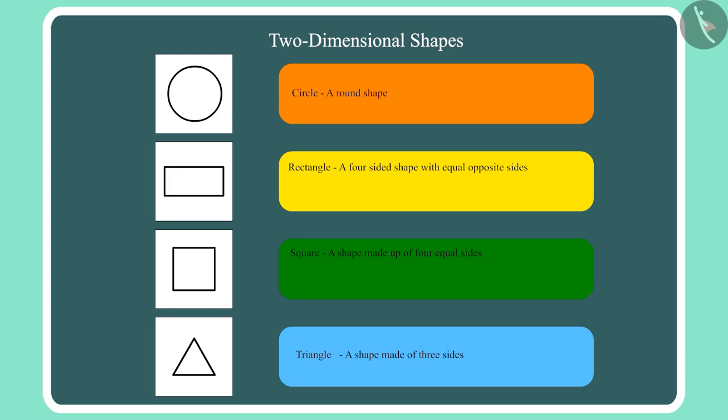The four-sided shape with equal opposite sides is called a rectangle. And this shape, which is called square, is made up of four equal sides. And this is a triangle, because this shape is made up of three sides.